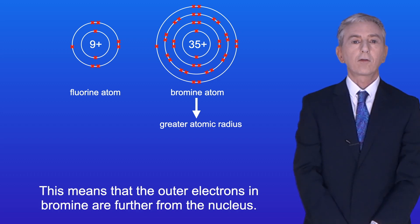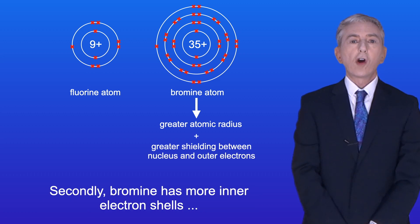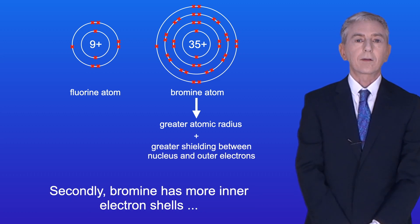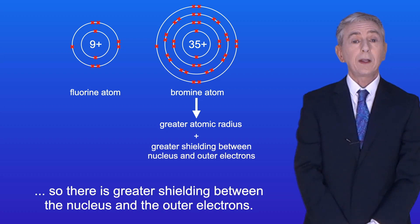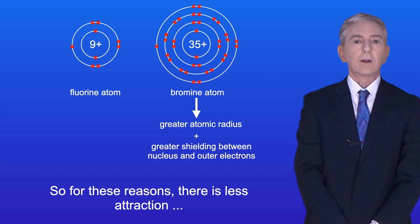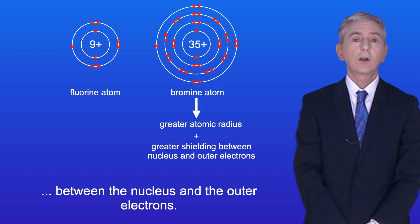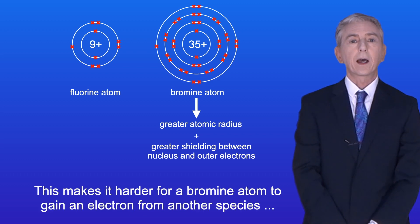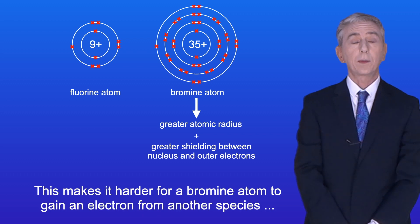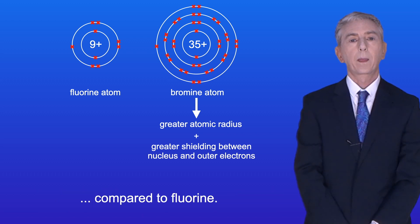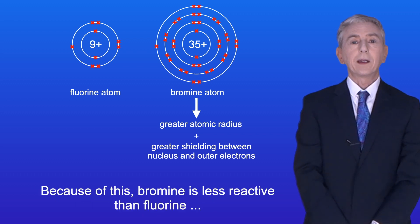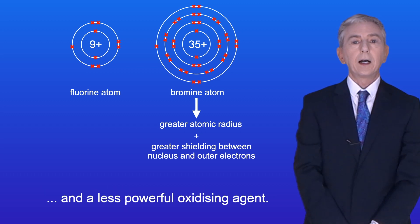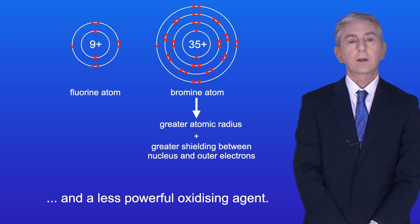This means that the outer electrons in bromine are further from the nucleus. Secondly, bromine has more inner electron shells, so there's greater shielding between the nucleus and the outer electrons. So for these reasons, there's less attraction between the outer electrons, and this makes it harder for a bromine atom to gain an electron from another species compared to fluorine. Because of this, bromine is less reactive than fluorine, and a less powerful oxidizing agent.